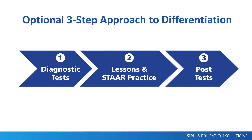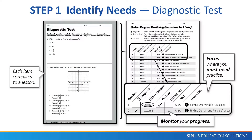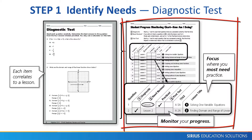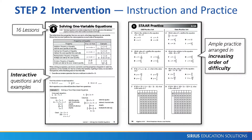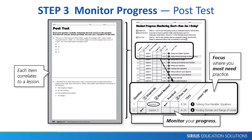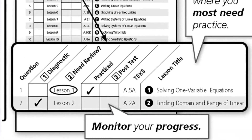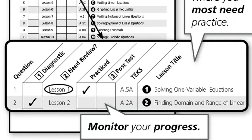The workbook includes an optional three-step approach to differentiate instruction and practice for mixed-ability classrooms. Step 1 is to identify individual needs using the diagnostic test; the student progress monitoring chart can be used to create individualized learning plans. Step 2 is intervention using targeted lesson instruction and STAR practice. Step 3 is to monitor progress using the post-test that assesses the same TEKS in the same sequence as the diagnostic test. This three-step approach is an efficient way to prioritize and individualize remediation when preparation time is limited, such as for retests.